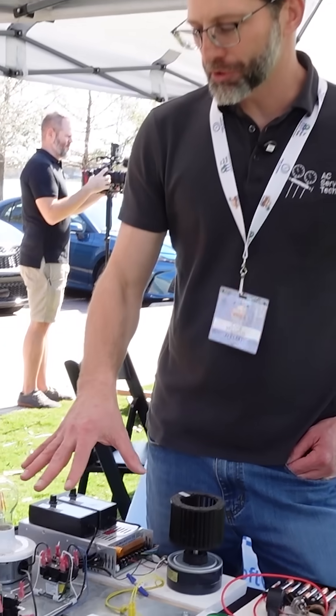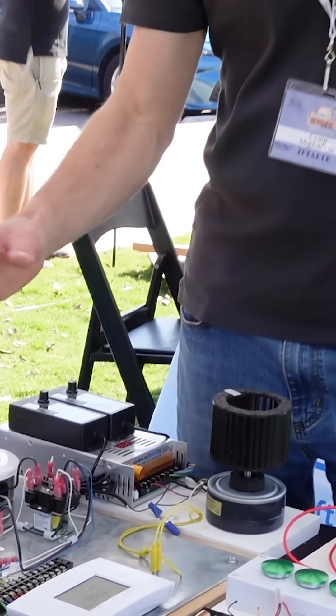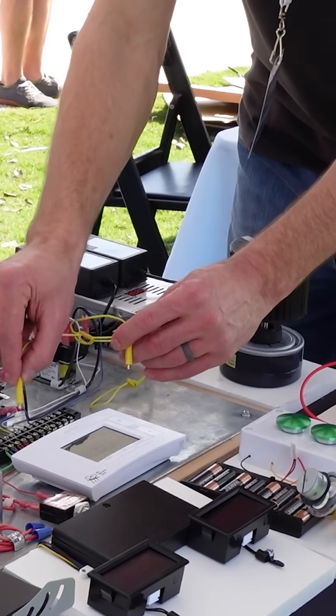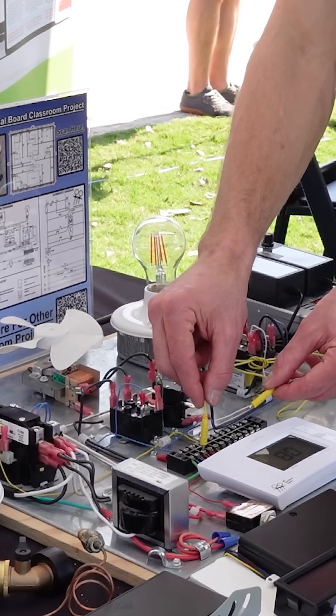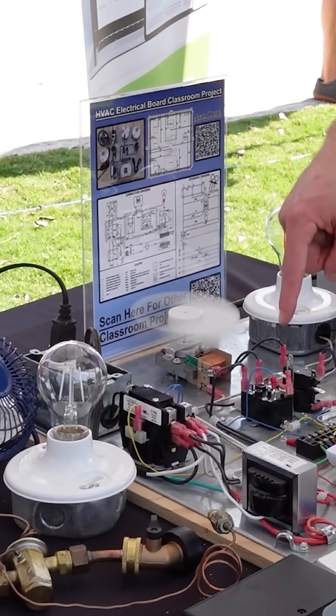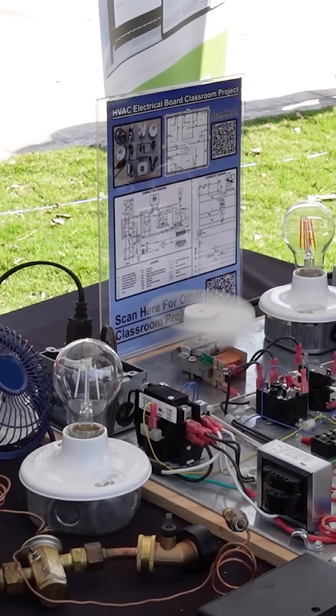This is the electrical training board to replicate a gas furnace and air conditioning system. And so we have the little magnetic jumpers, but we can do it on the thermostat as well. So we can go from our R wire over to our fan. And so that'll turn the fan on with that little fan relay right there.